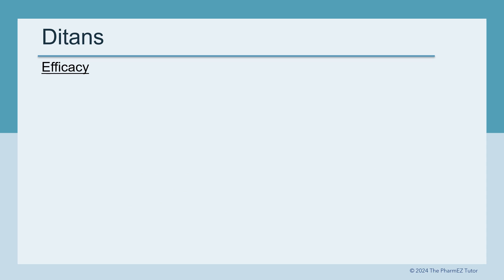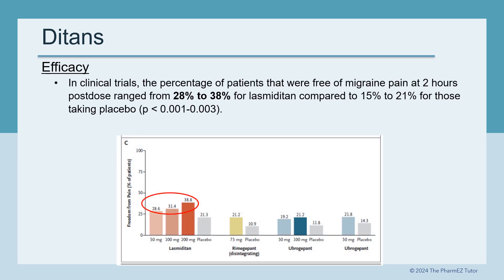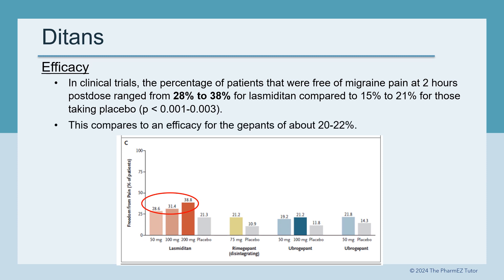What about the efficacy of the DITANs? In clinical trials, the percentage of patients free of migraine pain at 2 hours post-dose ranged from 28 to 38 percent for Lasmiditan, compared to 15 to 21 percent for those taking placebo. This compares to an efficacy for the G-PANs of about 20 to 22 percent.